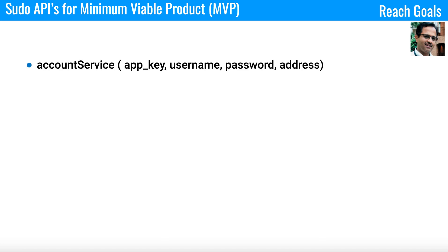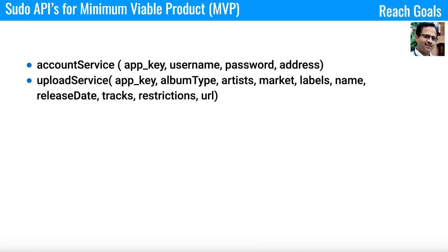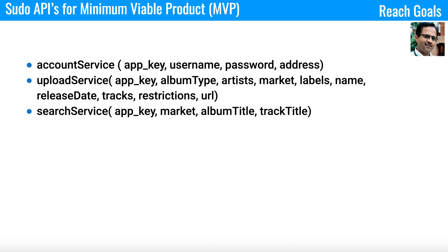Here we'll talk about the pseudo API for a minimum viable product. First, we need an API to create an account — the account service API will take an app key, username, password, and address. We will have an upload service API, primarily used to upload audio from public publishers or label owners, with fields like app key, album type, artists, market, labels, name, release date, tracks, restrictions, and URL.